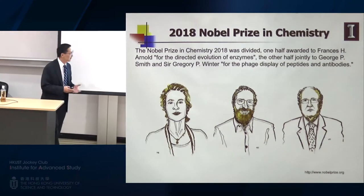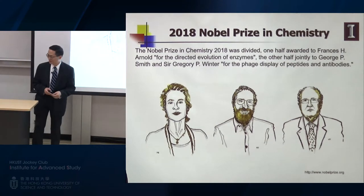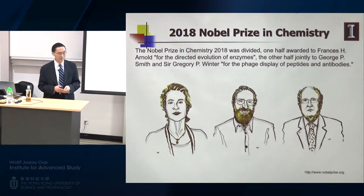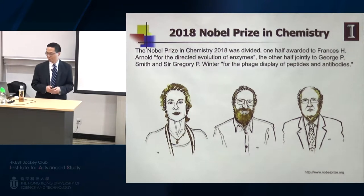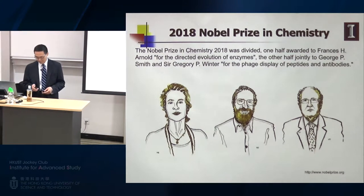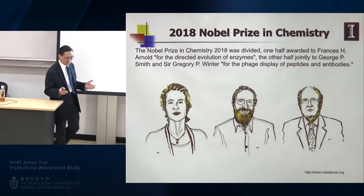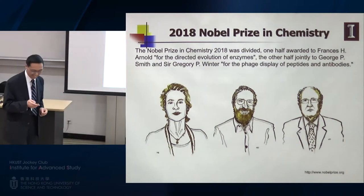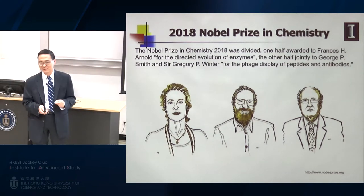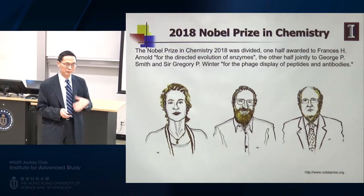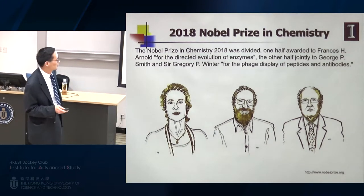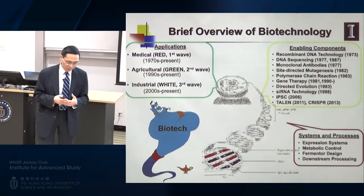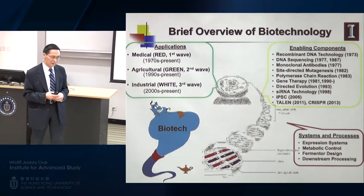This year's Nobel Prize in Chemistry was given to three researchers. My former advisor, Francis Arnold, got the Nobel Prize for directed evolution of enzymes. Coincidentally, my thesis title was called 'Enzyme Engineering by Directed Evolution.' I was really the first graduate student to work in her lab on directed evolution, and I recognized its importance many years ago.